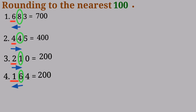Number 5: 939. I underline the hundreds place, which is 9, and I'm looking at the tens place, which is 3. I know that 3 is a rounding down number, so it has no power to push the 9 up. So I'll take 3 and 9, turn them to 0, and it remains 900.